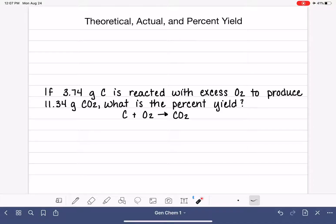In this video, I'm going to talk about theoretical yield, actual yield, and percent yield. Yield, in general, is referring to the amount of product that is made in a chemical reaction.